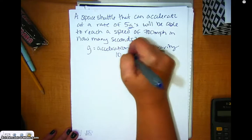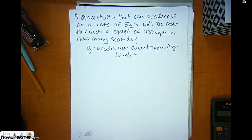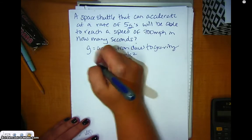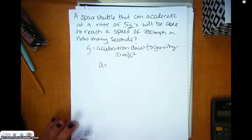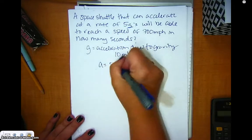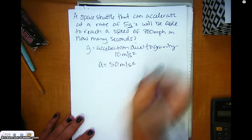The magnitude of acceleration due to gravity is 10 meters per second squared. So if something's accelerating at a rate of 5 G's, it's 5 times the amount of gravity. In this case, the value for our acceleration is going to be 50 meters per second squared.